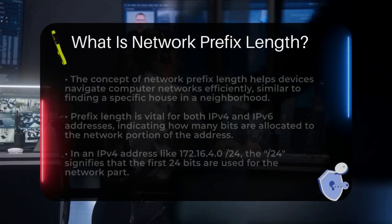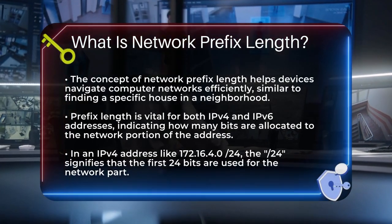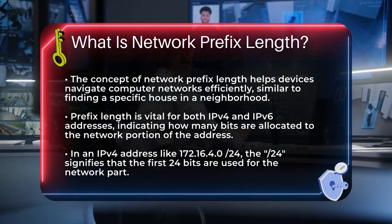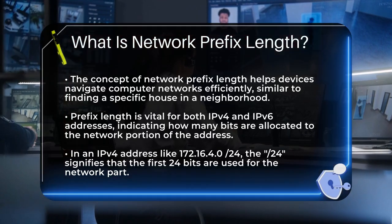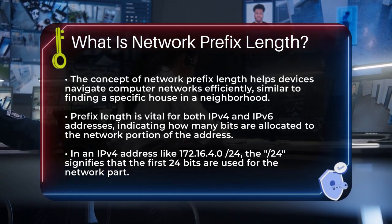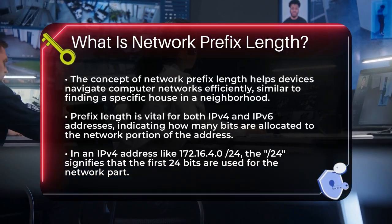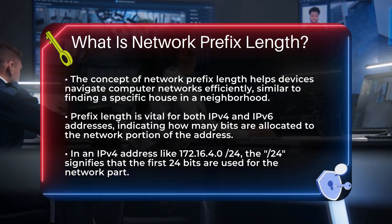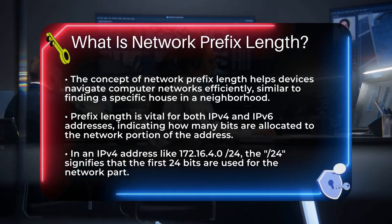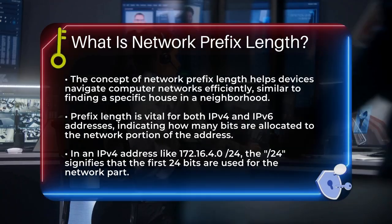Imagine you're trying to find a specific house in a vast neighborhood. You need a clear address to navigate there efficiently. In computer networks, the concept of a prefix length serves a similar purpose, helping devices find their way around the network. When we talk about IP addresses, whether it's IPv4 or IPv6, the prefix length is a crucial piece of information. It tells us how many bits of the IP address are dedicated to the network portion.